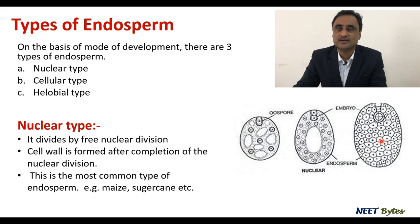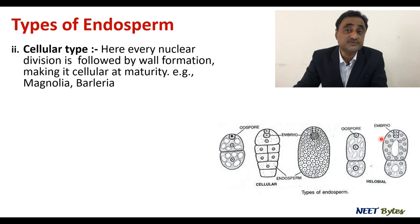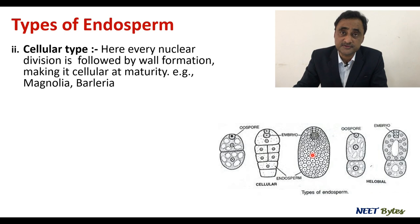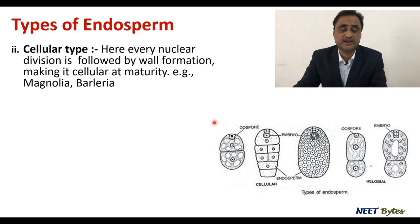The second is the cellular type. In the case of cellular type, each division is accompanied by cell wall formation. Here, after the first division, a cell wall forms, and all subsequent divisions also show cell wall formation. The final structure remains the same as in the nuclear type, but the mode of formation is different — each division is followed by cell wall formation. This is found in Magnolia.